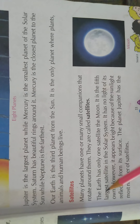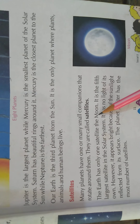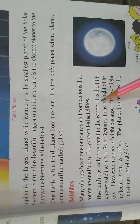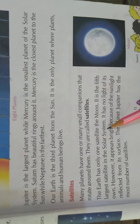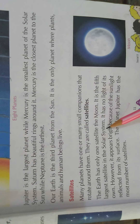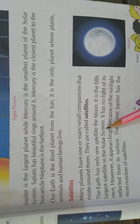The Earth has only one natural satellite — the moon. It is the most important satellite in the solar system, and this fact should be learned by heart.